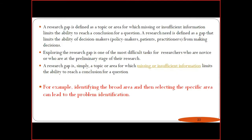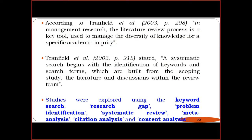A research gap is a topic or area for which missing or insufficient information limits the ability to reach a conclusion. Identifying a broad area and then selecting a specific area leads to problem identification. From the literature, using conceptual models, we identify the research gap, which is then converted into a research problem. As per the framework, a systematic research begins with the identification of keywords and search terms built from the scoping study, literature, and discussion within review teams.